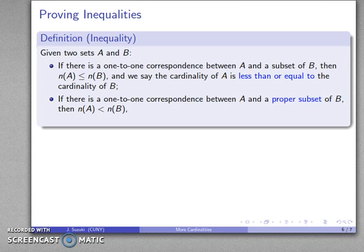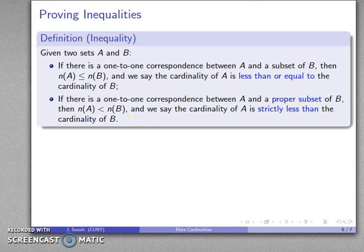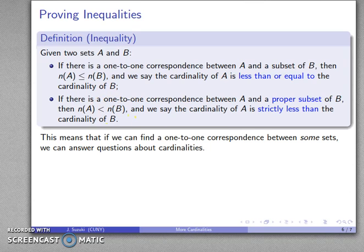On the other hand, if the one-to-one correspondence exists between A and a proper subset of B, then the cardinality of A is strictly less than the cardinality of B. That means if I can find such a one-to-one correspondence, I can start to answer questions about cardinalities.